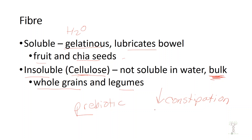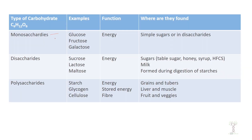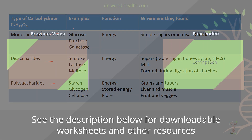Having lots of fiber in your diet helps prevent constipation, feeds good gut bacteria, and reduces the risk of colon cancer. How much do you need? 25 grams or more per day. An easy way to remember: decrease sugar to 25 grams or less, and increase fiber to 25 grams or more. Good fiber sources include whole grains, fruits and vegetables, and nuts and seeds. To summarize, we covered monosaccharides, disaccharides, and polysaccharides.